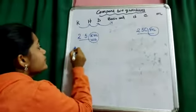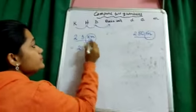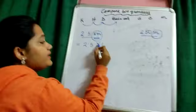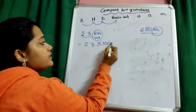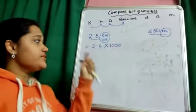2.5 into, higher to lower, that's why multiplication. 10 to the power 3, that is 1 followed by 3 zeros.